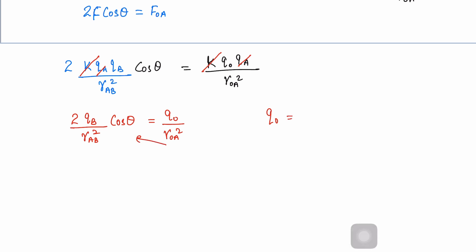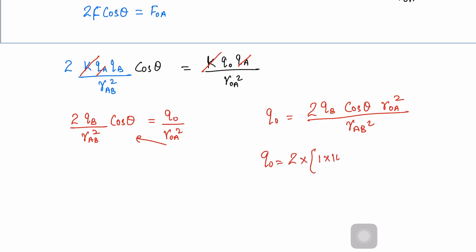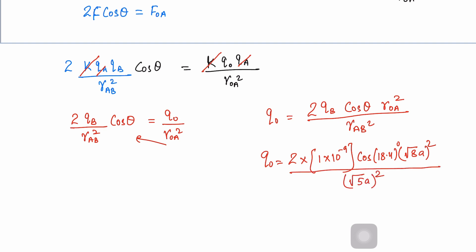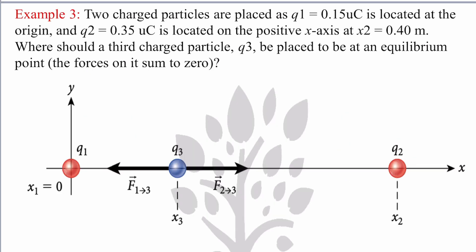Now find q_naught: q_naught = 2·q_b·cos(θ)·r_oa² / r_ab². q_b = negative 9, cos(18.4°), r_oa = √8·a, r_ab = √5·a. Substituting and solving, the value of q_naught is 3.03 × 10⁻⁹ Coulombs.